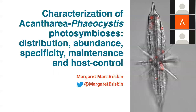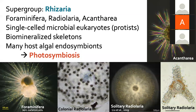To get started, acantherians belong to the super group Rhizaria, which also includes foraminifera and radiolaria. Most of these organisms have biomineralized skeletons and all of them are single-celled microbial eukaryotes, or protists. Foraminifera have calcium carbonate skeletons, radiolaria have silica skeletons, and acantherians have strontium sulfate skeletons. Many of them host algal symbionts, participating in photosymbiosis.